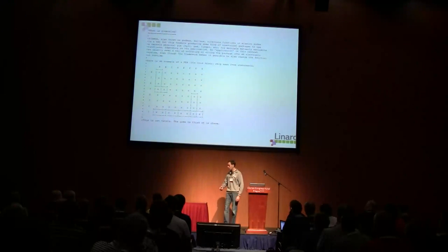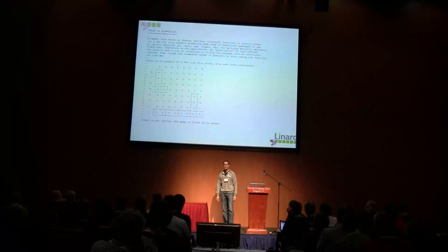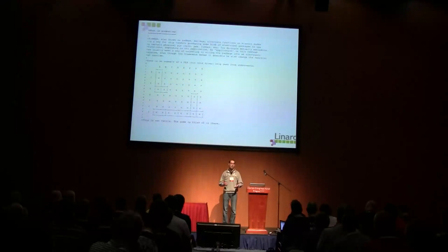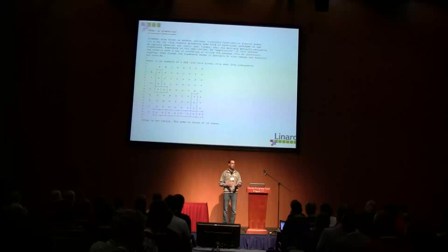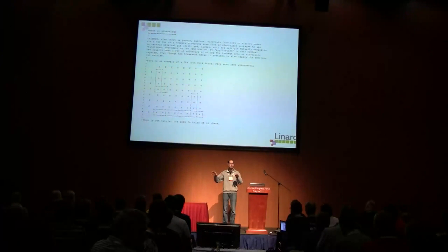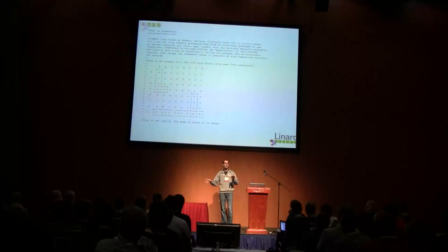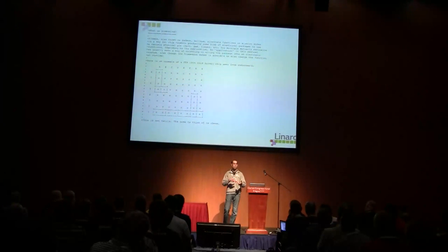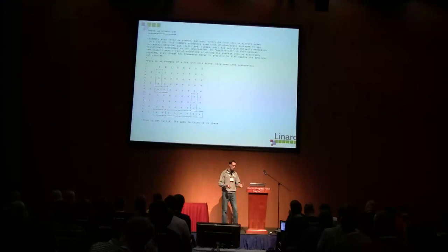With some of the newer systems like OMAP, you've got more than one core — the core that Linux runs on and then DSPs or M3 cores that are running other applications — and you need to be able to describe how to switch these back and forth.